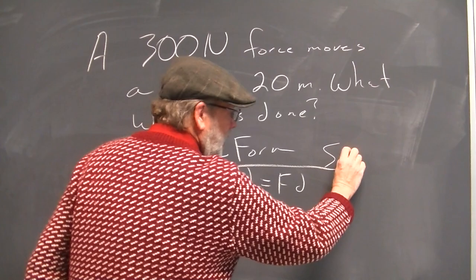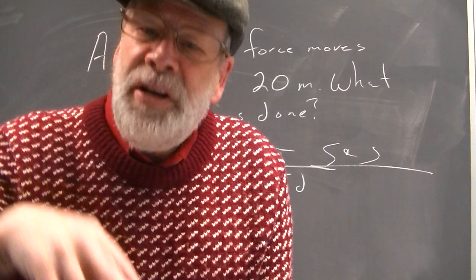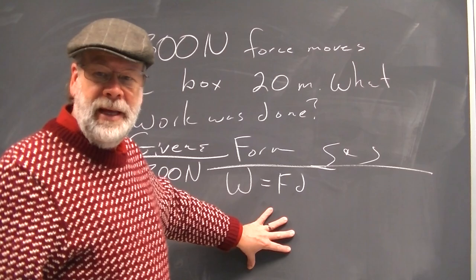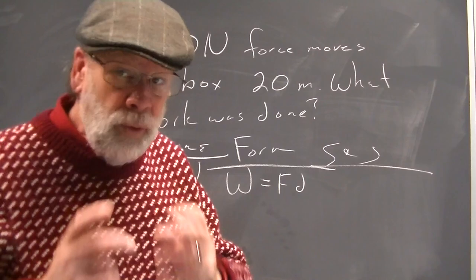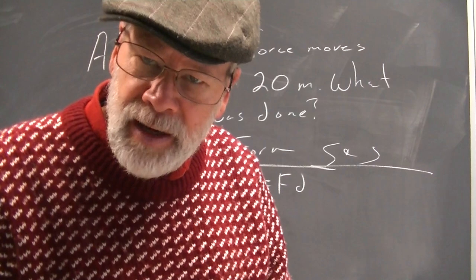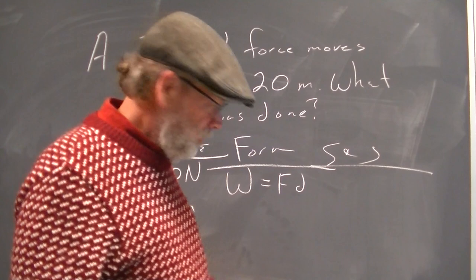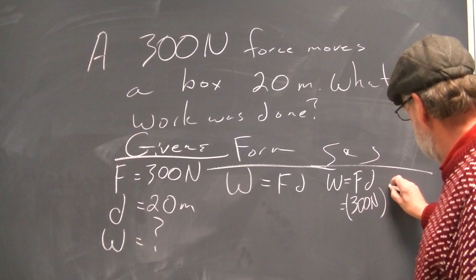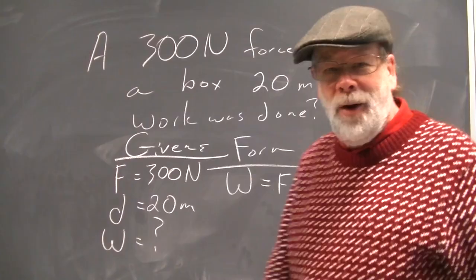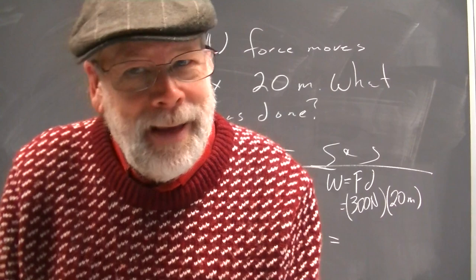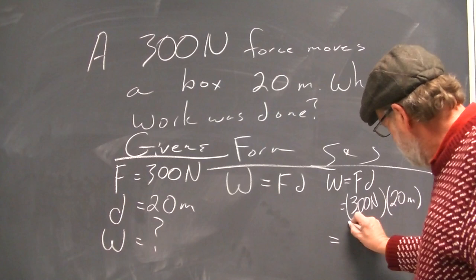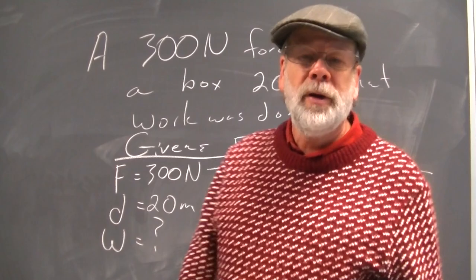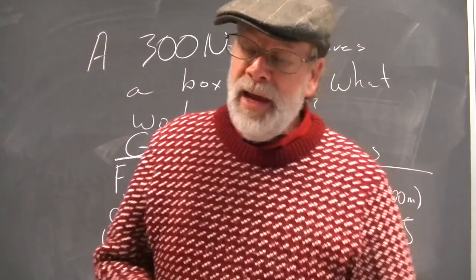Work equals force times distance. Please remember, if we do have to manipulate that formula — solving for distance or something — all that manipulation has to be done right under the formula. We never just take that formula, toss it over here, substitute in, and solve for the unknown algebraically somewhere else. So we rewrite it: force times distance equals 300 newtons times 20 meters. The units work out to newton meters, so it's joules. 300 times 20 is 6,000 joules worth of work.